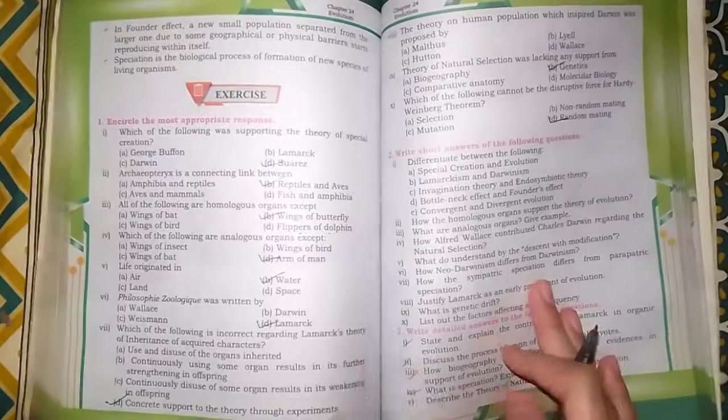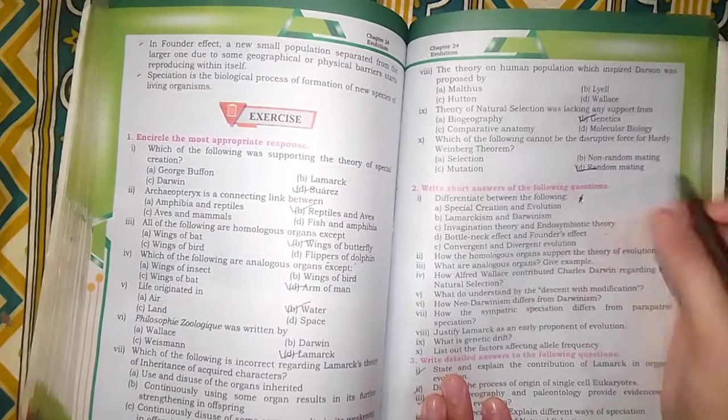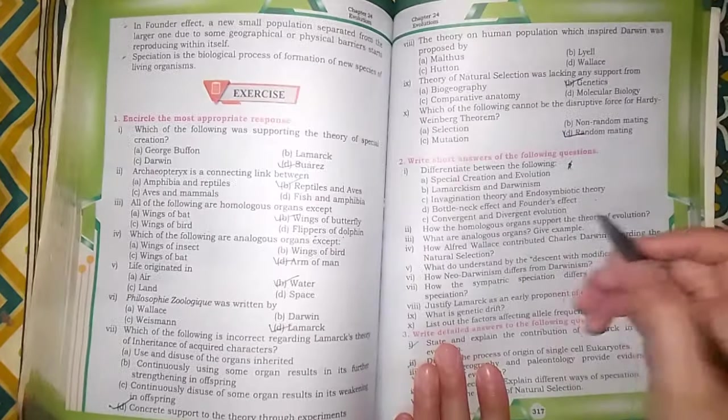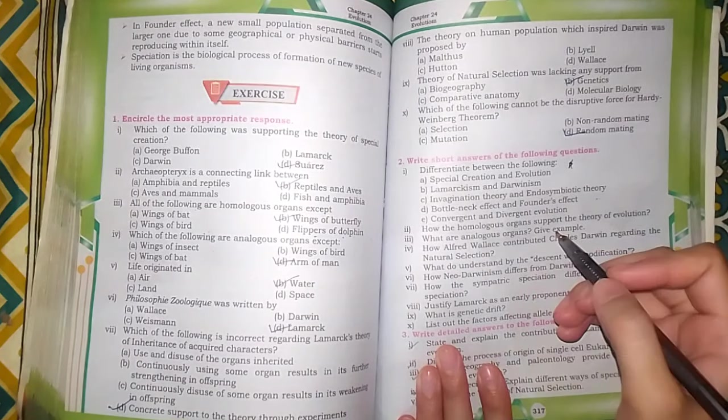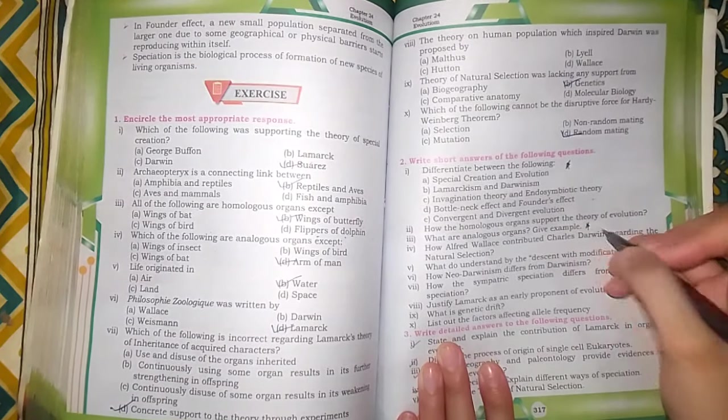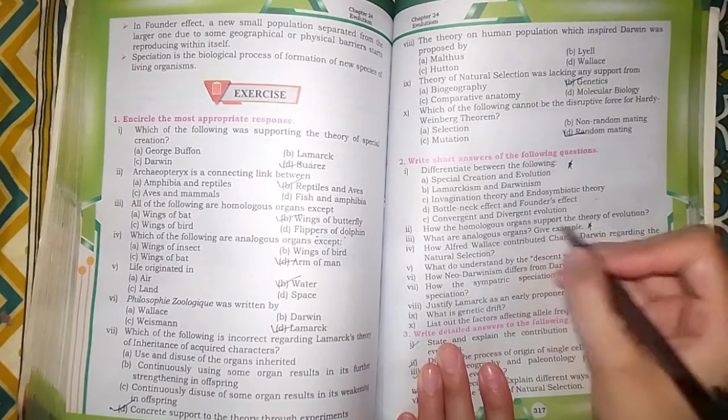This is the evolution chapter. It is also included in MDCAT. The first question is the difference, you have to do the difference. Then, human organs support the theory of evolution, analogous organs define with examples. Of course, you also know this can come in the definition.